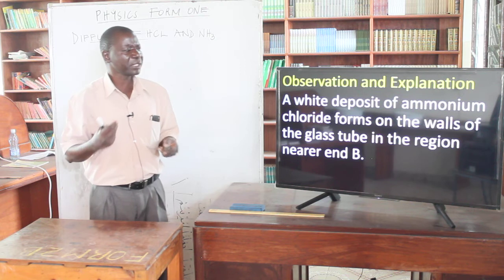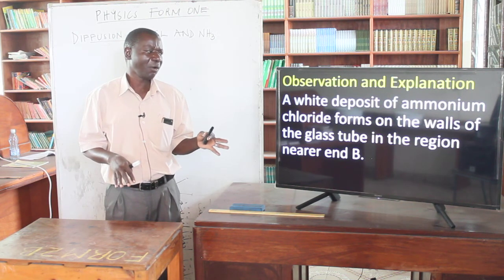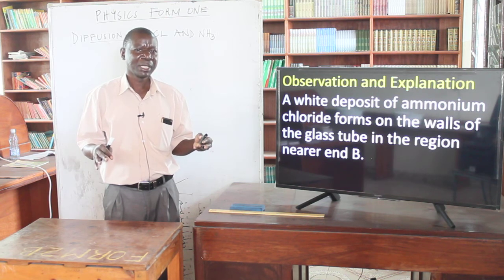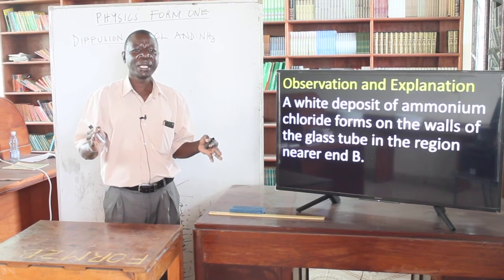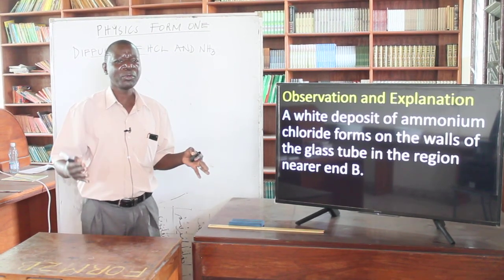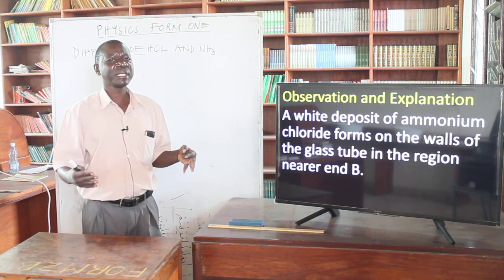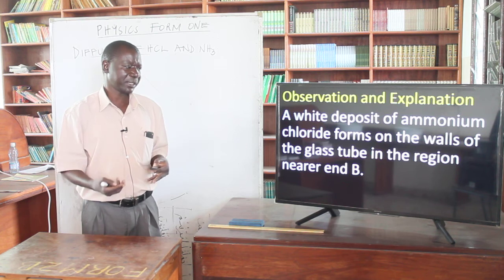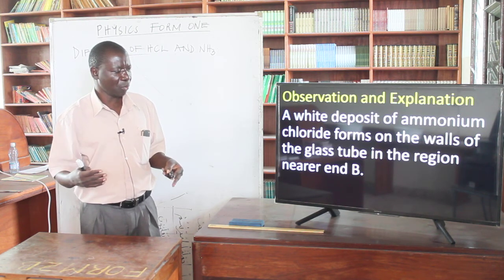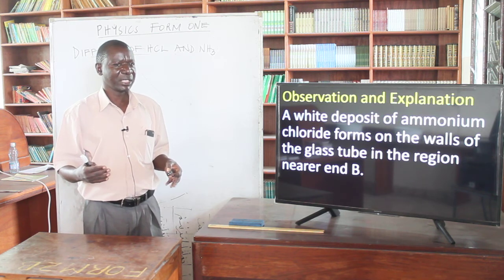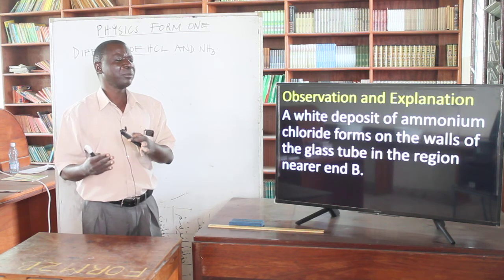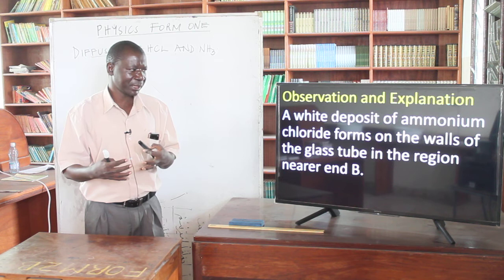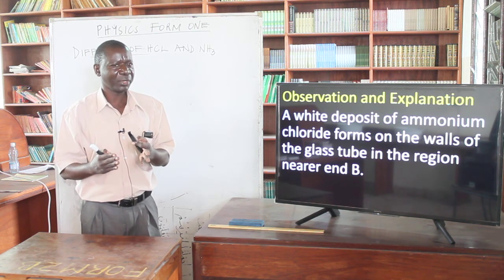The observation is that a white deposit of ammonium chloride will be formed. The major observation is where this deposit is formed. The deposit is formed in a region nearer to the end of the hydrochloric acid — that is, toward end B where we have put the hydrochloric acid. So toward that end, the deposit will be formed. This means that is the region where the two gases have come together to react — closer to the hydrochloric acid side.